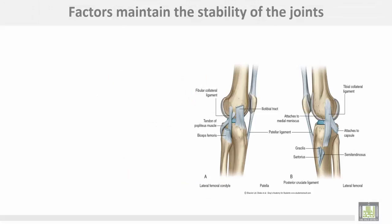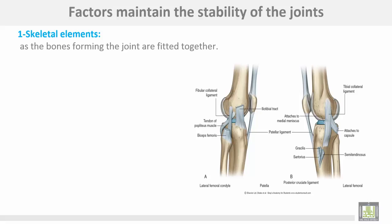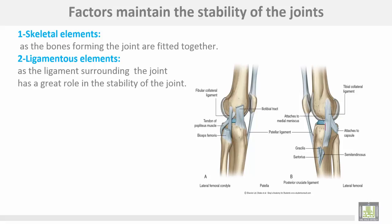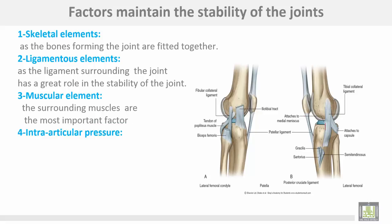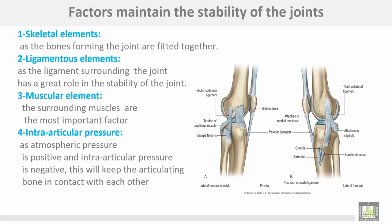Factors that maintain the stability of joints: number one, skeletal elements — the shape of the bones forming the joint; when bones are well-fitted together this maintains stability. Number two, ligamentous elements — ligaments surrounding the joint play a great role in stability, as seen in the knee joint. Number three, muscular elements — surrounding muscles are the most important factor. Number four, intra-articular pressure — atmospheric pressure outside is positive while intra-articular pressure is negative; this difference maintains the bones in contact with each other.